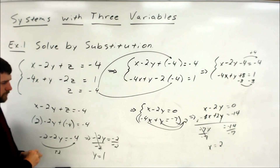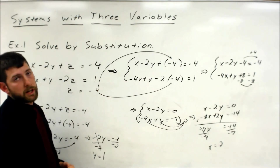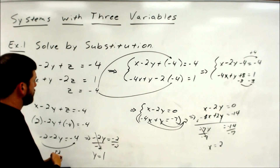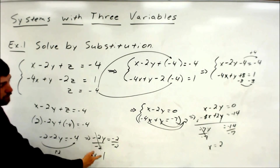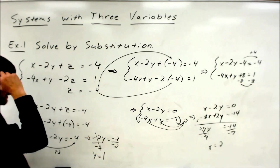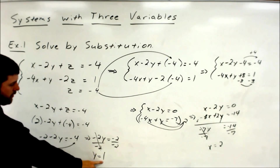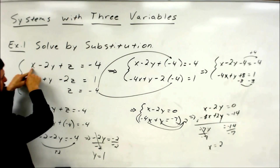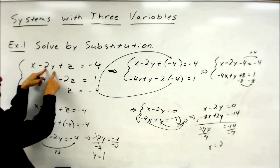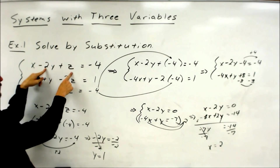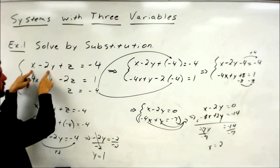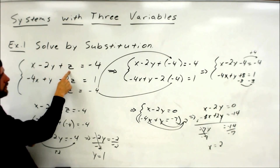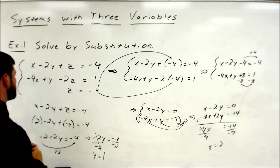You always want to go through and check it out. There's a lot of arithmetic — multiplication, addition, division going on here — so just double-check you didn't miss something. We check by plugging our answers back in to see if they work in all three equations. So plugging x equals 2, y equals 1, z equals negative 4: we get 2 minus 2 times 1 plus negative 4, which is 0 minus 4, equals negative 4. It checks.